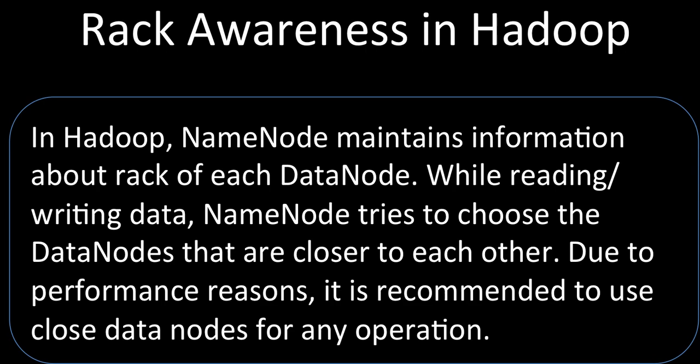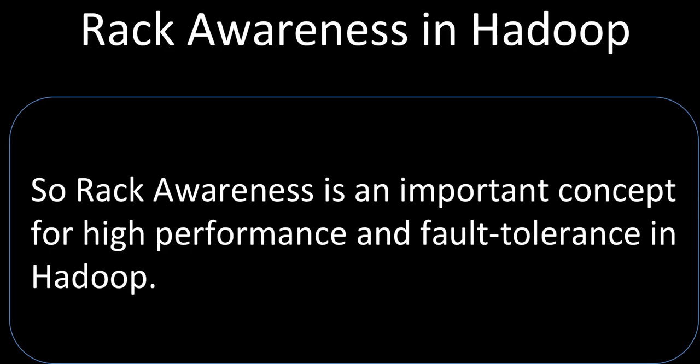If a node is far apart, we cannot read the data quickly. But if there is a crash, the whole rack crashes, which means all the nodes on that rack can go away. So replication always takes place on nodes which are on some other rack or some other location. Replication has to take place on another rack, whereas for any computation our first preference should be nodes on the same rack.